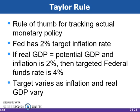Rule 1: When real GDP equals potential GDP and inflation is at the target rate of 2%, the federal funds rate should be at 4%. Rule 2: For each 1% increase of real GDP above potential GDP, the Fed should raise the federal funds rate by 0.5%. Rule 3: For each 1% increase in the inflation rate above the 2% target rate, the Fed should raise the real federal funds rate by 0.5%.